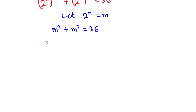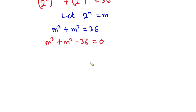Now let's equate everything to zero. We have m cubed plus m squared minus 36 is equal to zero.